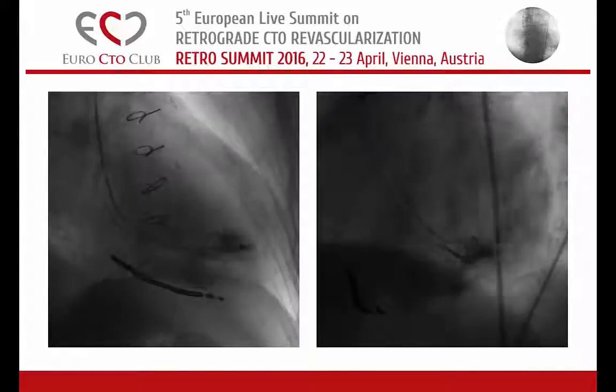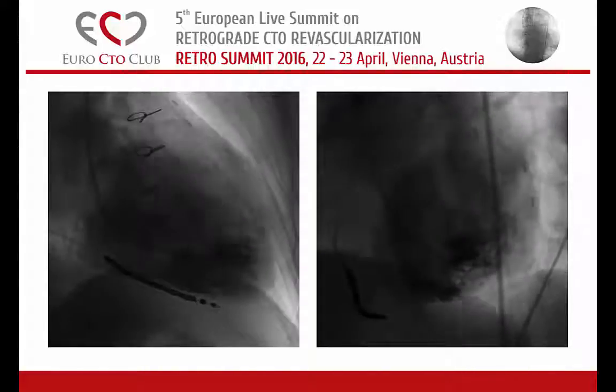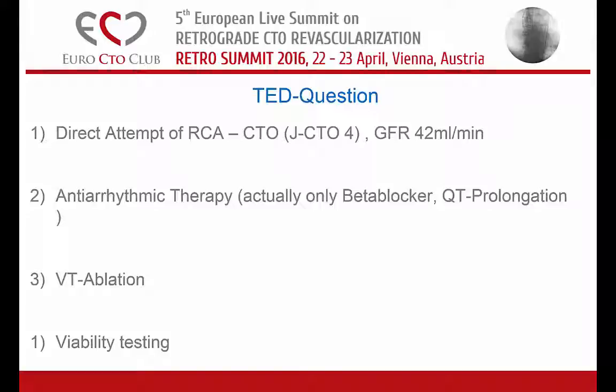And this is the LV function — poor LV function with severe hypokinesia in the posterior and inferior wall. The question is: would you go for a direct attempt of the RCA? We have a GFR of 42 and we know the patient has two renal transplant failures. Is it a J-CTO score 4? Or would you go for more anti-arrhythmic therapy? He had only a beta blocker and a little QT prolongation. Would you go for VT ablation or would you go for viability testing? What would you do, Manos?